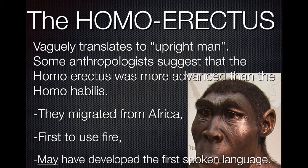Moving on to Homo erectus. They existed about 2 million to 150,000 years ago. We discovered the earliest Homo erectus in the late 1800s, a little over 100 years ago. They grew to be similar to people today — about five foot to six foot one. They were also the first group to leave Africa, traveling around the world and settling in various places, and the first to use fire. Part of the reason they could travel so far is that their posture was more erect — the upright man — which allowed them to walk great distances.